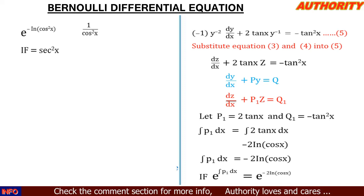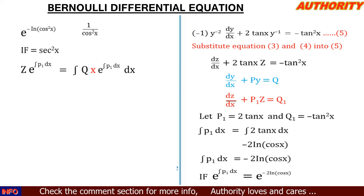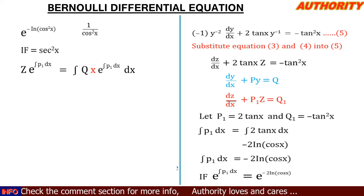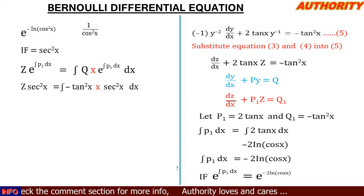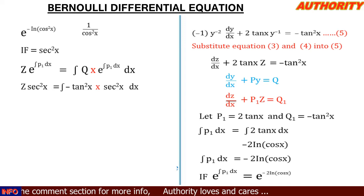The solution formula gives us z multiplied by the integrating factor equals the integral of Q₁ times the integrating factor dx. So we have: z·sec²(x) = the integral of minus tan²(x)·sec²(x) dx.